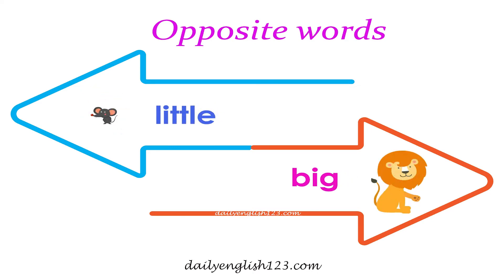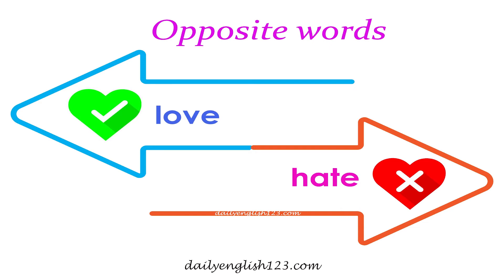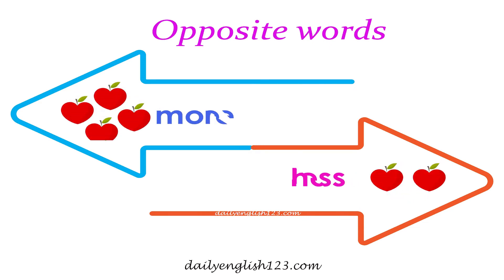Number 12: Little is the opposite of big. Number 13: Love is the opposite of hate. Number 14: More is the opposite of less.